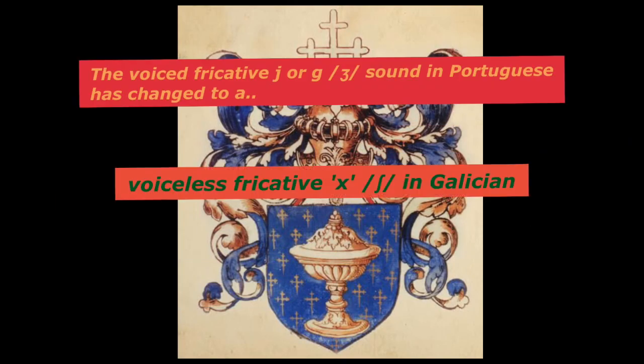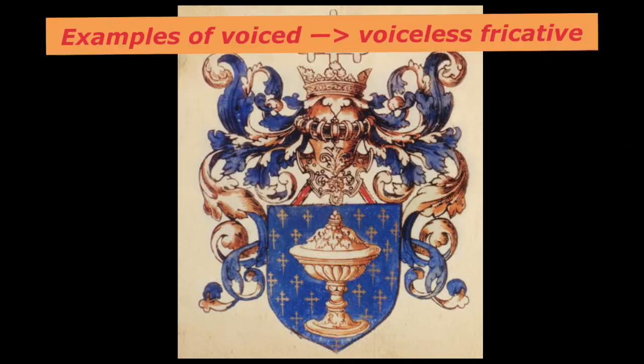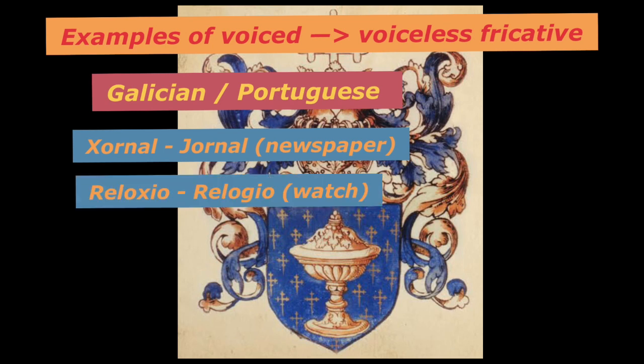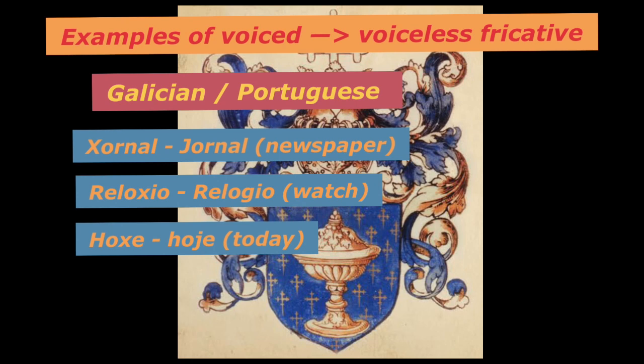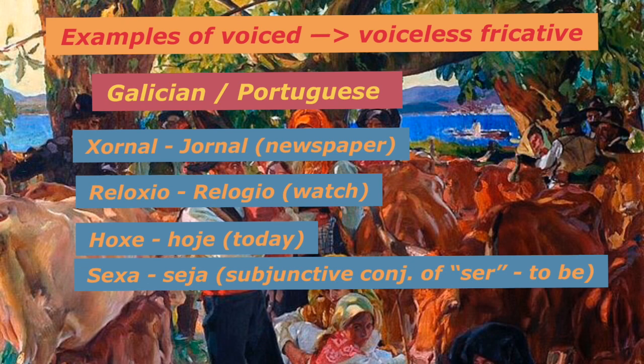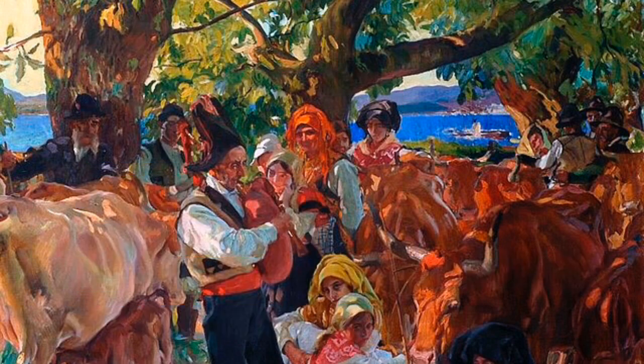The J sound in Portuguese has changed to a voiceless fricative, Sh, in Galician. Some examples of this: xornal — jornal (a newspaper or a journal); relógio — reloxo; hoxe or oxi — hoje (today); sexa — seja (this is the subjunctive form of the verb ser, to be); xunto — junto.